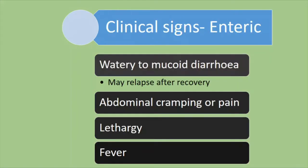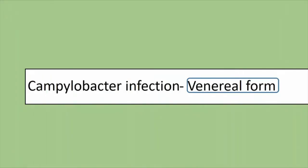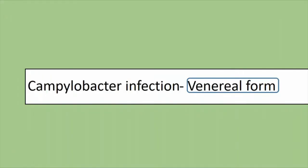The clinical signs of the enteric form may sometimes be absent, but often include watery to mucoid diarrhea, which may recover then relapse. Other signs include abdominal cramping and pain, lethargy, and sometimes fever. Lesions include severe colitis or small intestinal enteritis, sometimes with hemorrhagic ulceration. The mesenteric lymph nodes become edematous, and histologically there is sloughing of epithelial cells, bacterial presence, and ulceration.